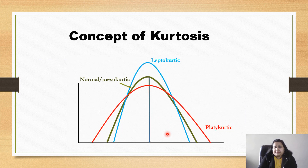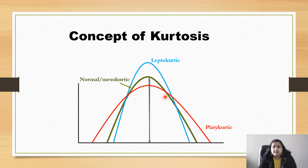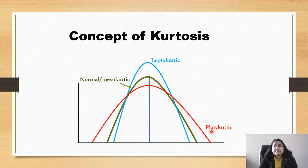The next topic is kurtosis. The green curve again represents the normal distribution. Kurtosis measures the peakness of the data compared to the normal distribution. The blue curve is leptokurtic and the red one is platykurtic. Data with peakness greater than the normal distribution is called leptokurtic, while data with peakness less than the normal distribution is called platykurtic.